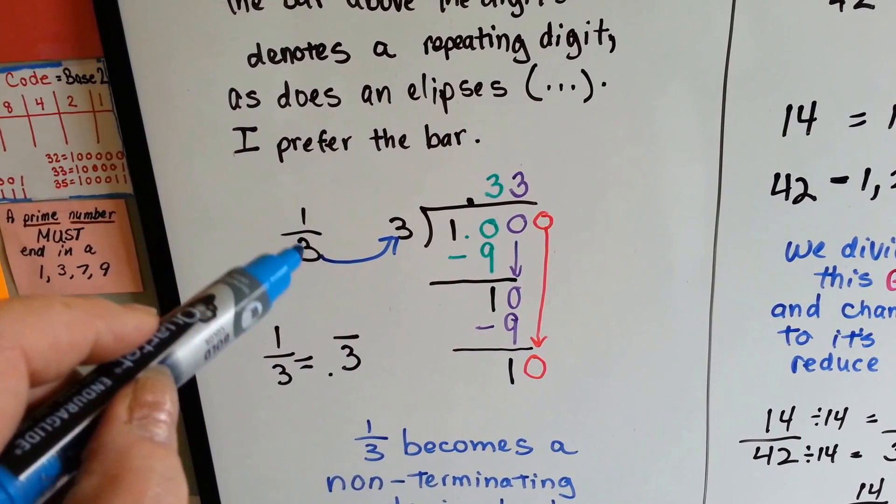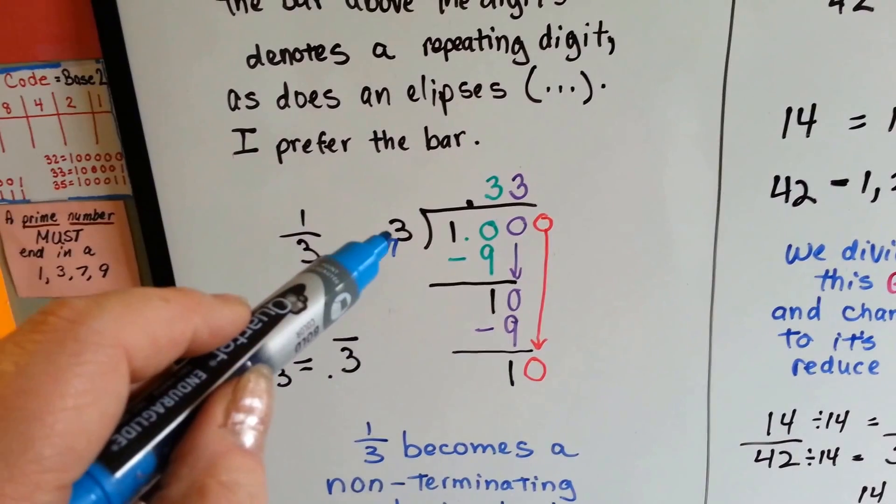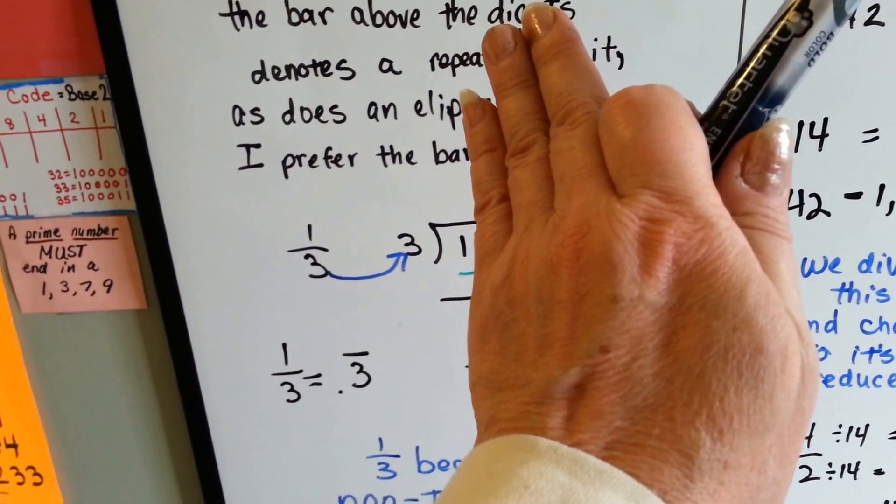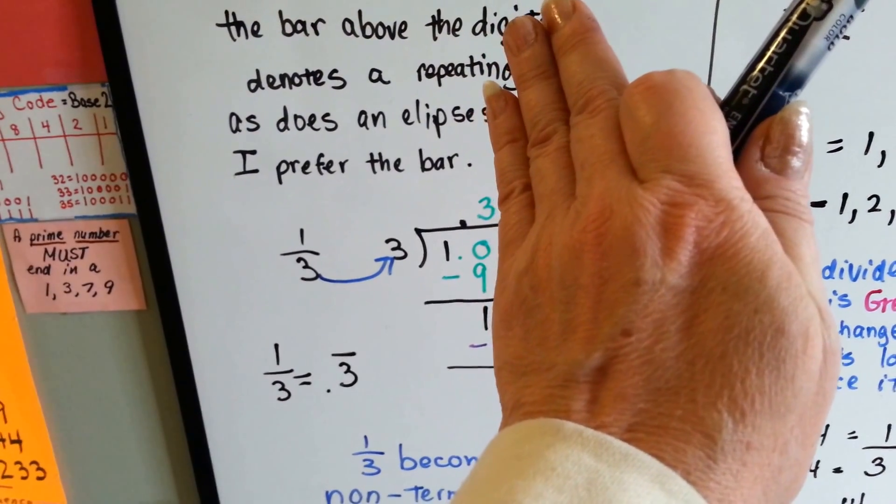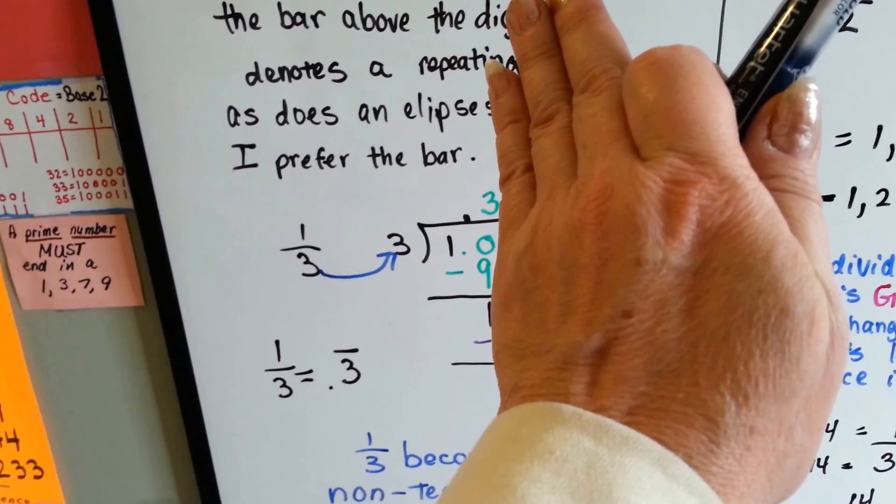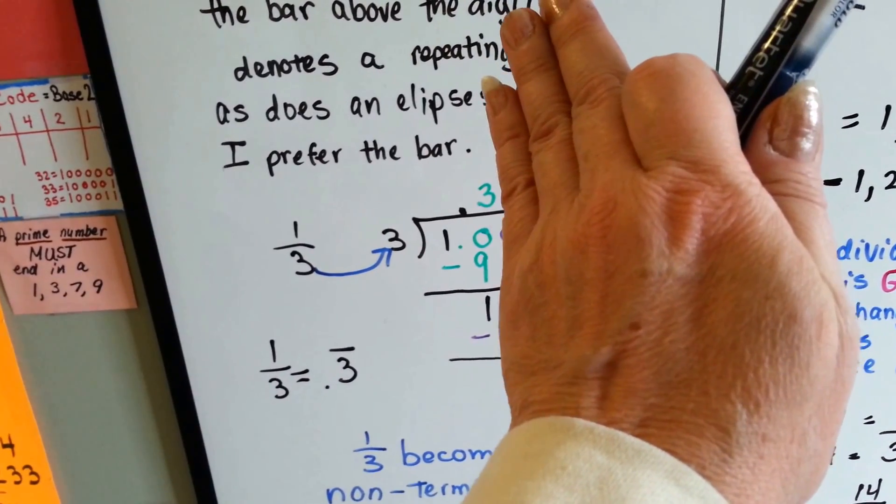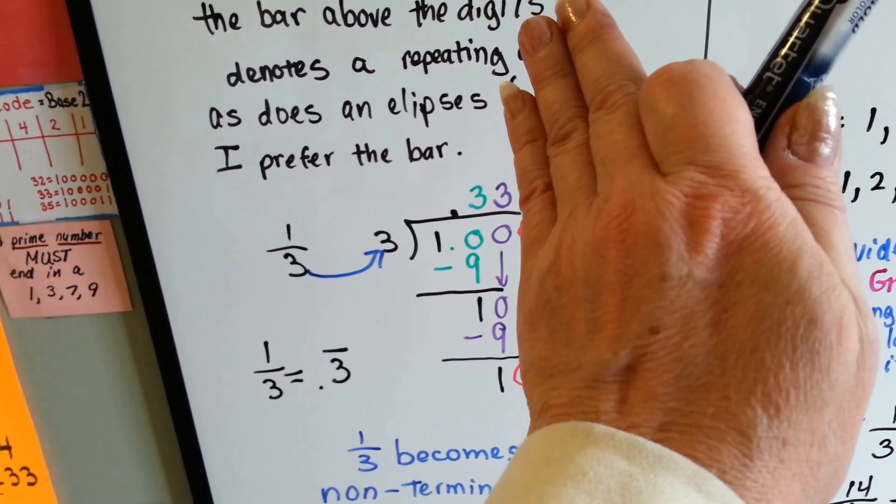We turn the denominator into the divisor, and even though you think it would be crazy to fit the 3 into the 1, we do it by adding a decimal point and a 0. 3 can fit into 10 three times. 3 times 3 is 9. We subtract and get 1 left over, so we add another 0.